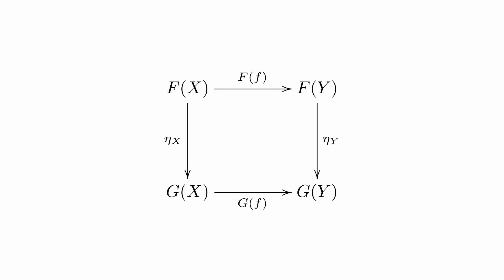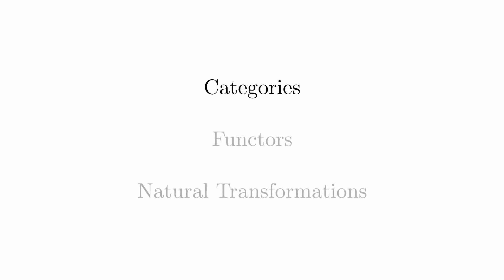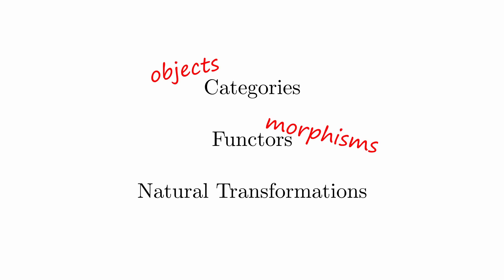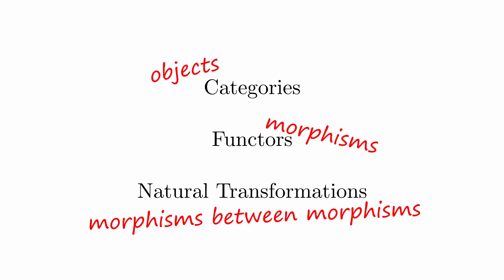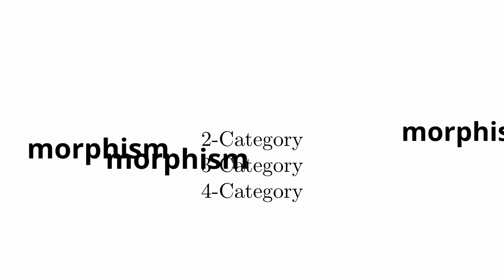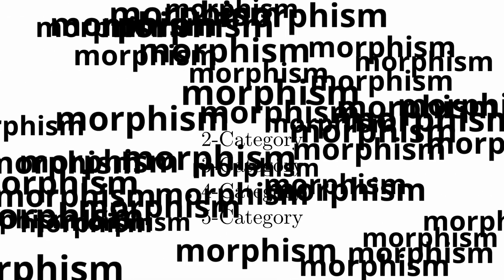Fact 15: Remember natural transformations? They're maps between functors. But what about maps between natural transformations? The category of categories, together with functors and natural transformations, is in fact an example of a 2-category. These have objects, morphisms, and morphisms between morphisms. But we've started counting now, and once mathematicians start counting, they can't stop — literally. You've got 3-categories with morphisms between morphisms between morphisms, 4-categories, 5-categories, and then somehow you go all the way up to infinity-categories. What the hell even are those?